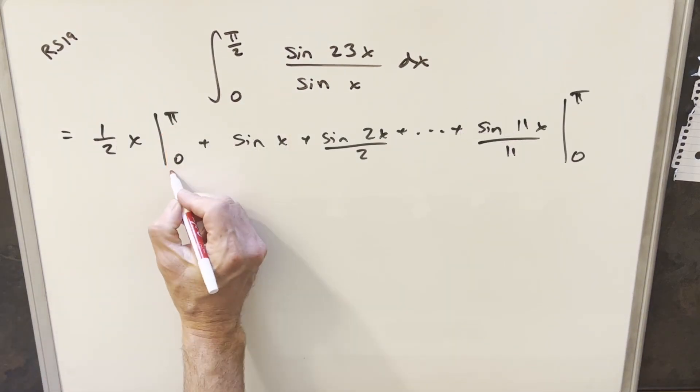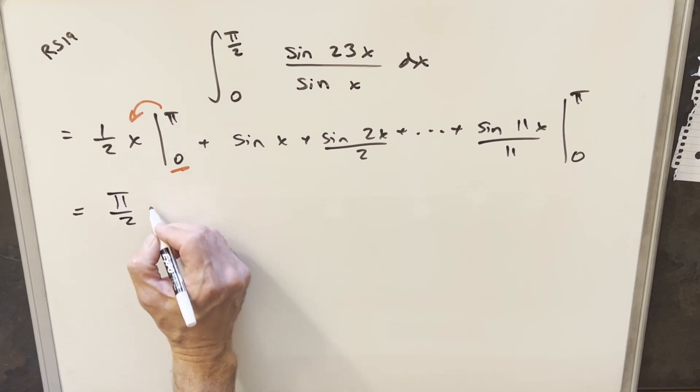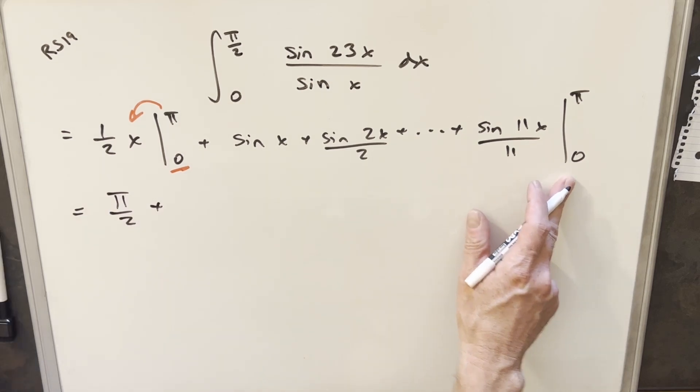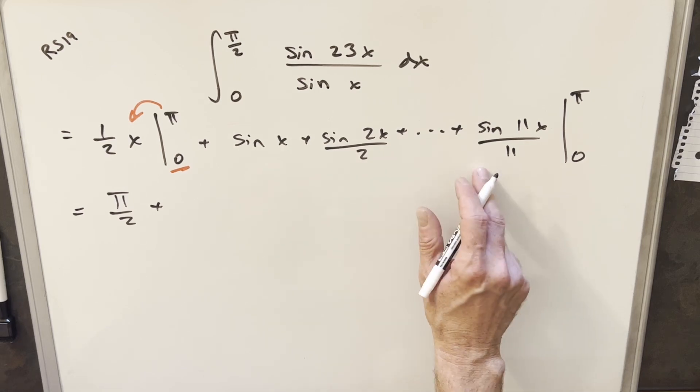Okay, now for this first term, we plug zero in. This is going to be zero. So we'll plug pi in here. So for this first piece, I'm going to have just pi over 2. And then here, we'll notice when you plug zero in for all these sine terms, every one of them is going to zero. So we don't have to worry about that.